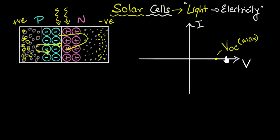What does V_OC depend on? Does it depend on light intensity? It does, but not much. Even if you increase or decrease light intensity, once saturation is reached no more electron-hole pairs can be swept across. With more light you get more pairs, but they still just come back and recombine. So V_OC doesn't depend much on light; it depends on the construction — if you make the junction longer you can accumulate more charges and get a higher voltage.